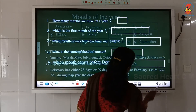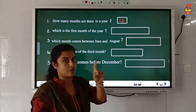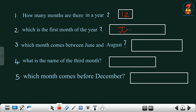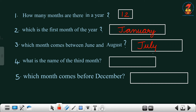Now we will do some questions. Question number one: how many months are there in a year? There are 12 months, so here we write 12. Second question: which is the first month of the year? The first month is January. Third question: which month comes between June and August? Counting from January — January, February, March, April, May, June, July. So which month comes between June and August? July. The spelling is J-U-L-Y, July.